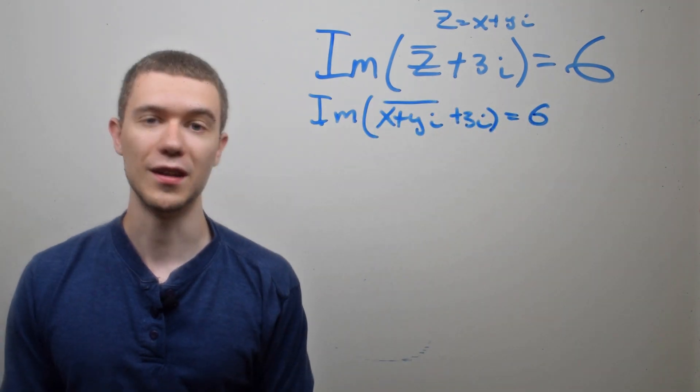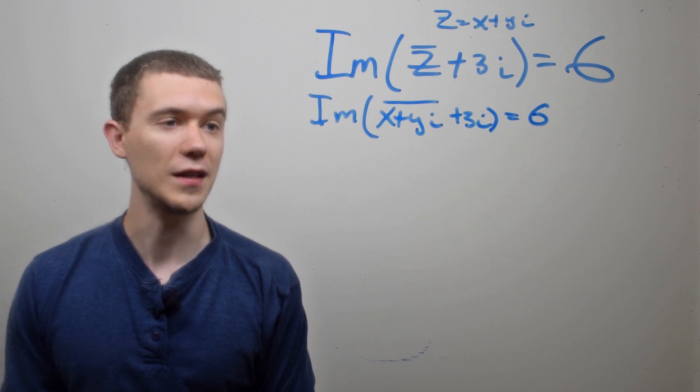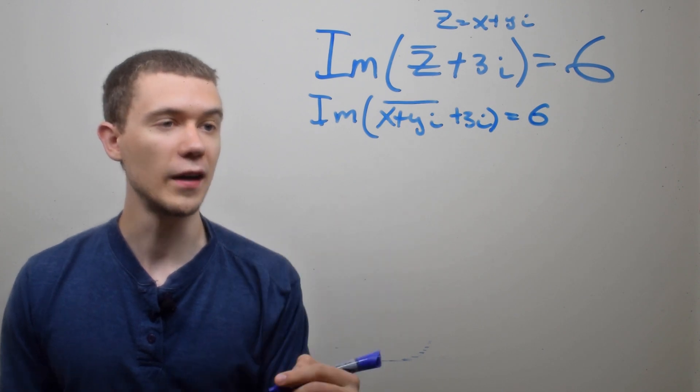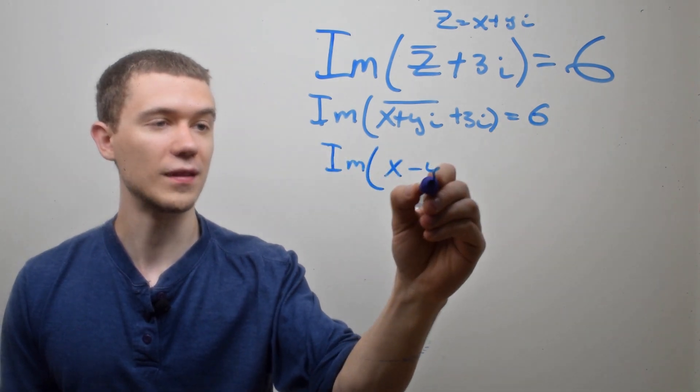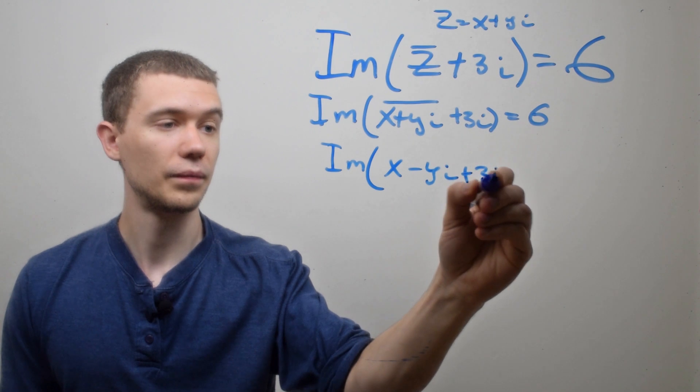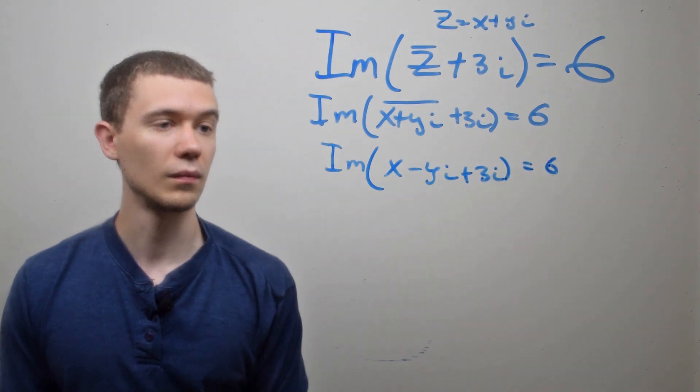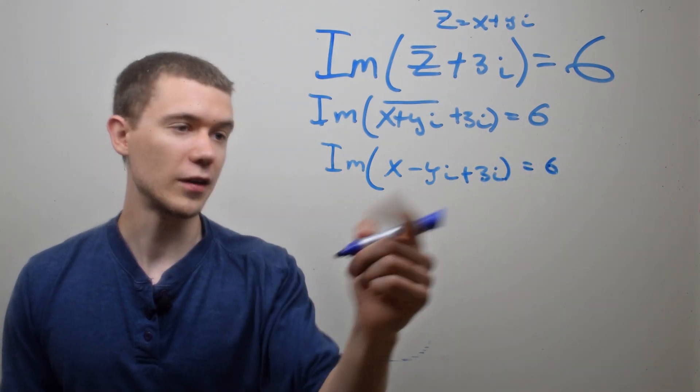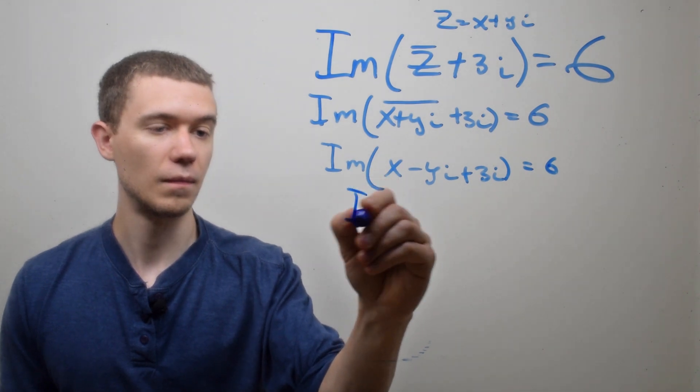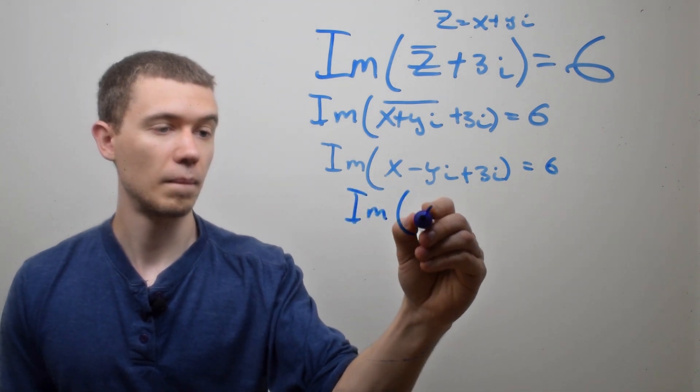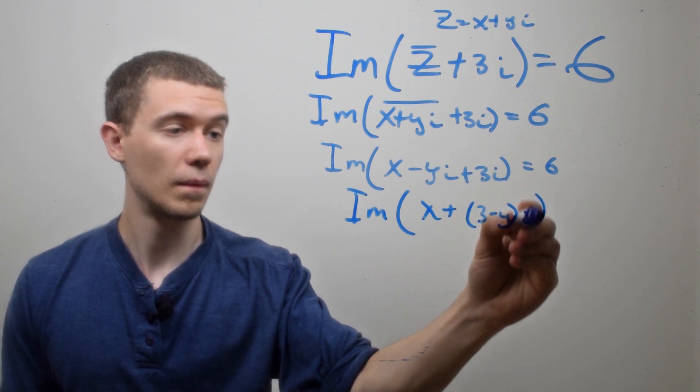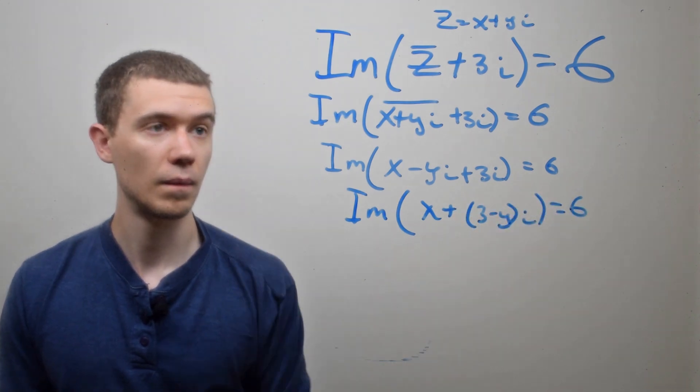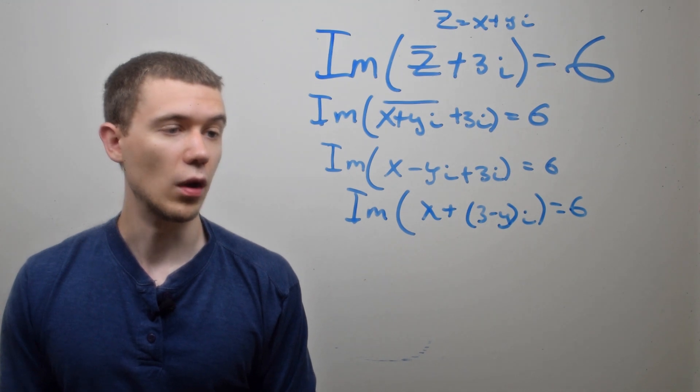Okay, so I just substituted X plus YI for Z. And now next I'm going to take the conjugate of this thing. That has the effect of just flipping the sign in the middle. And now I can factor out the I here.